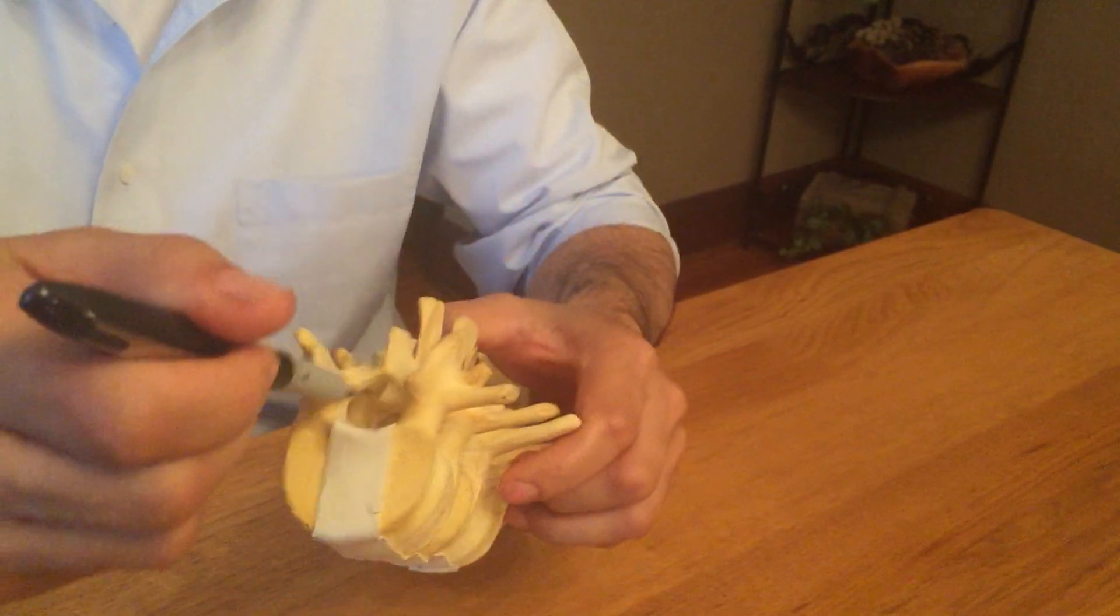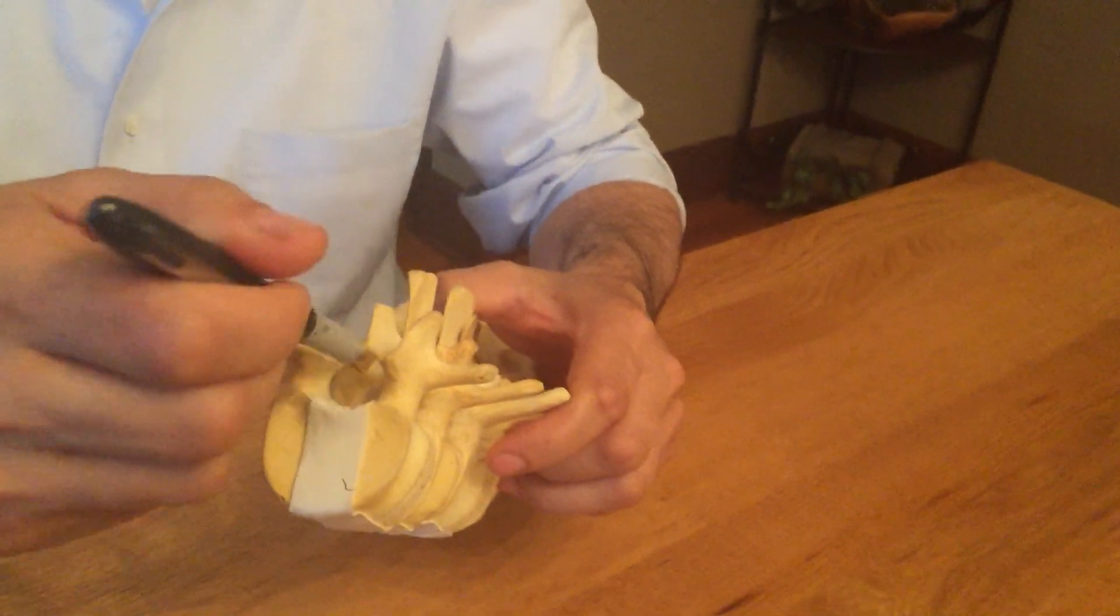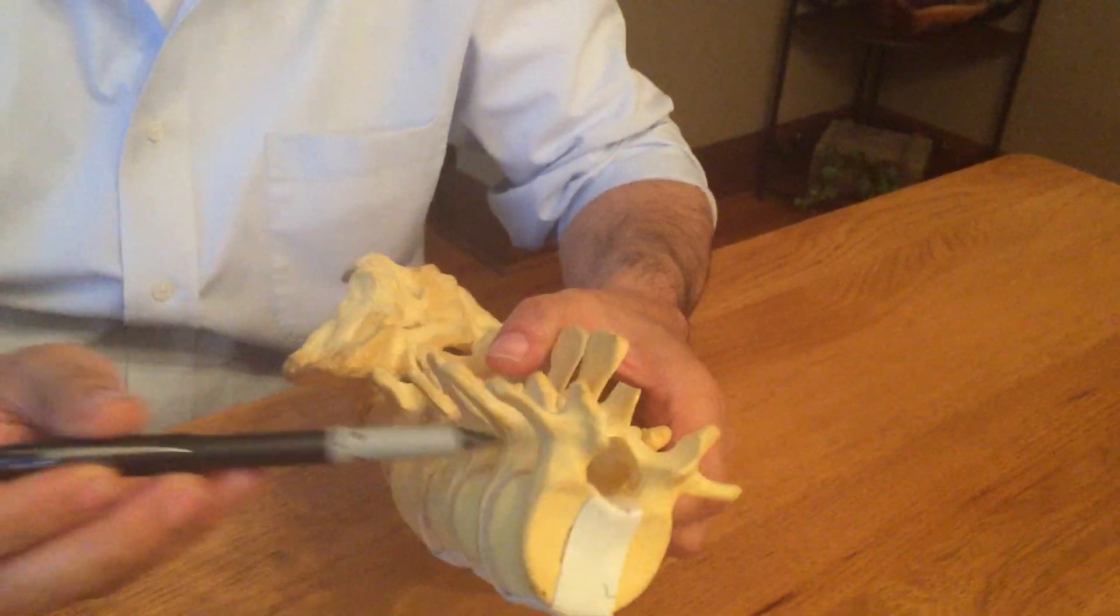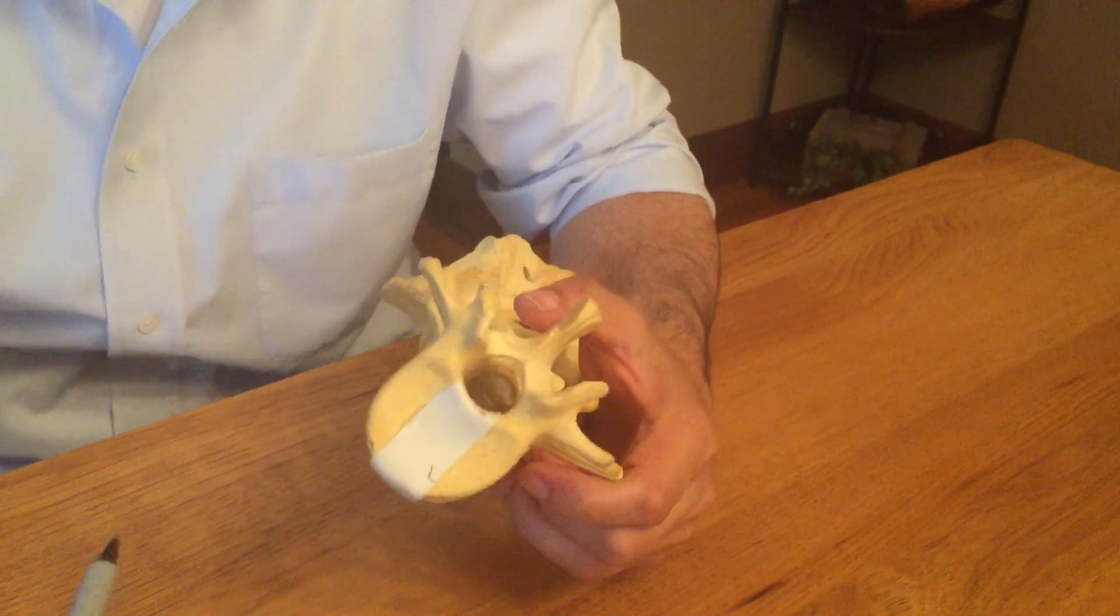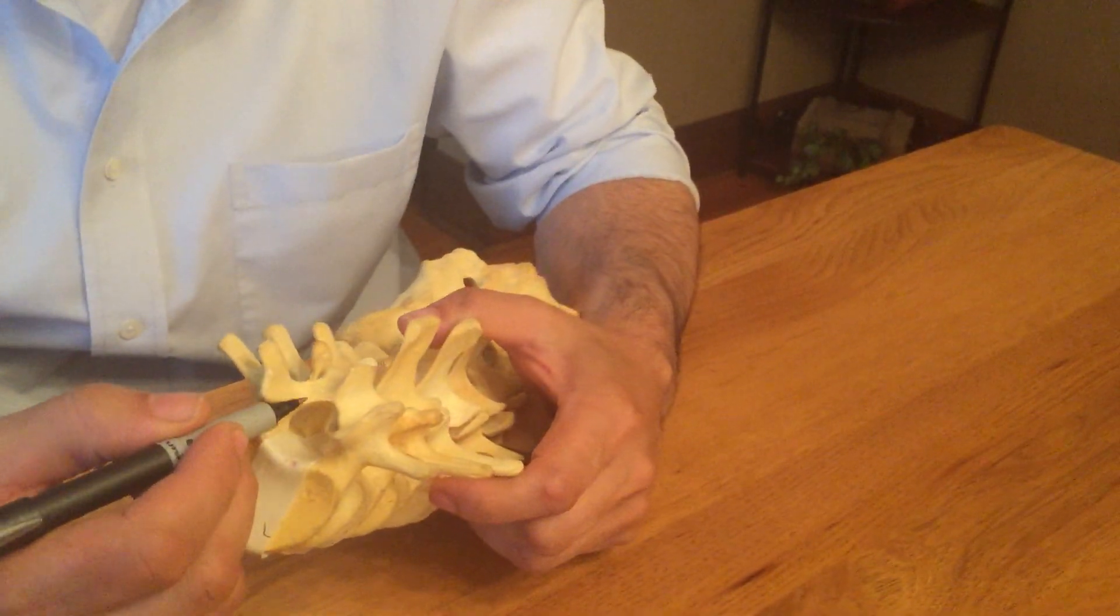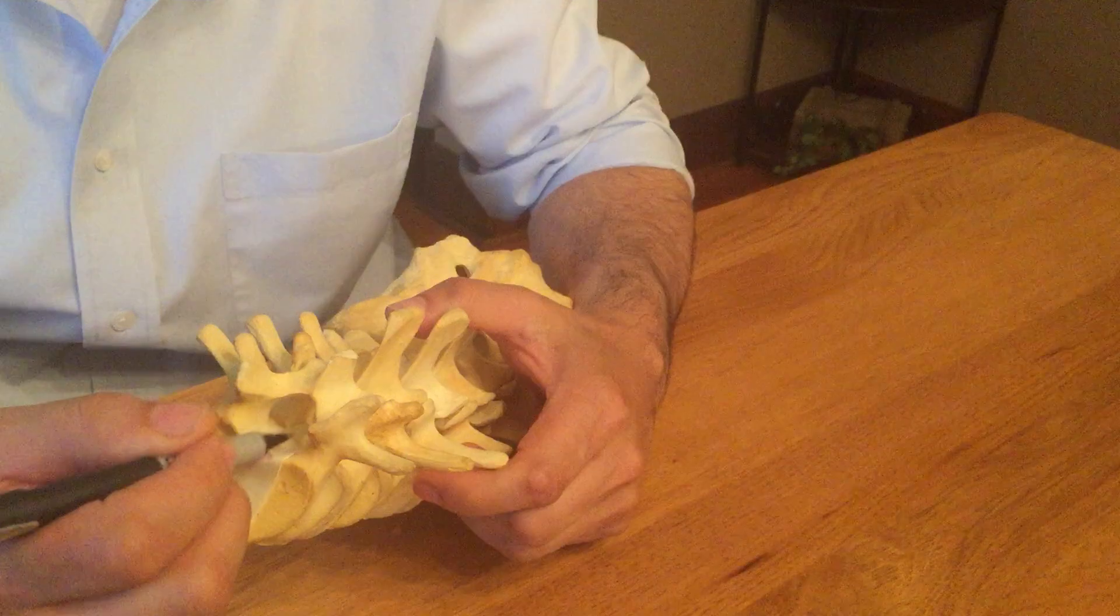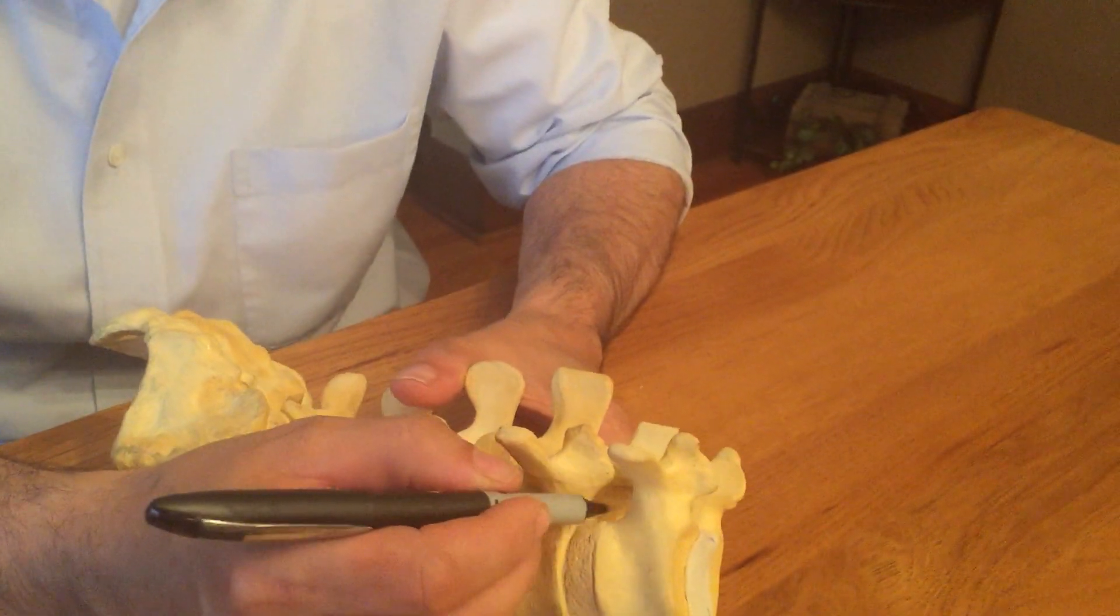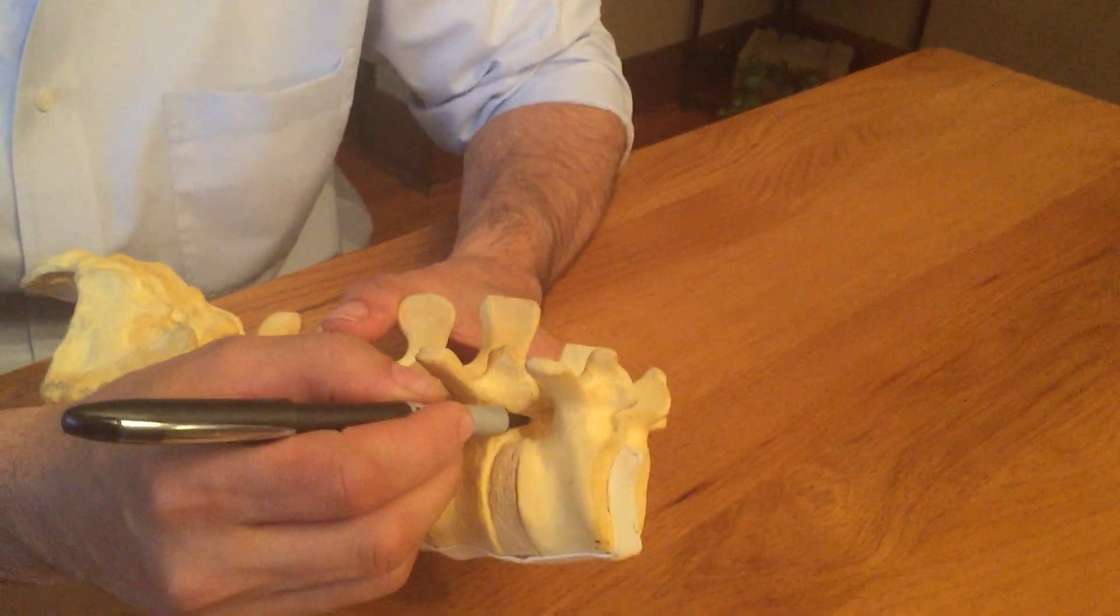This is the foramen, this is the central canal or spinal canal. Spinal cord goes through and nerve roots are coming out. In the aging process, the degenerative process builds up tissue that narrows the space—spinal canal, which we call spinal stenosis, or the foramen, which is called foraminal stenosis.